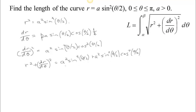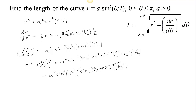Adding those up, r² + (dr/dθ)² gives a² sin⁴(θ/2) + a² sin²(θ/2) cos²(θ/2). From these two we can pull out a common a² and both terms have at least a sin², so we pull out a² sin²(θ/2). From the first term we're left with sin²(θ/2), and from the second term we're left with cos²(θ/2). So what we need to integrate is the length integral from 0 to π of √(a² sin²(θ/2)) dθ.